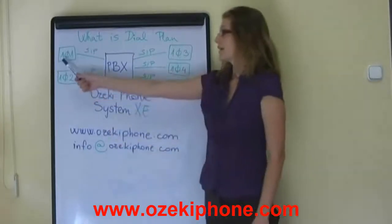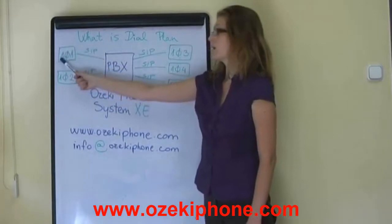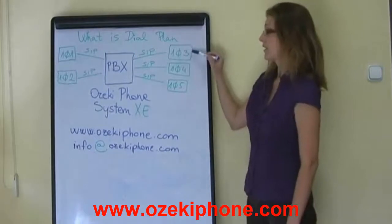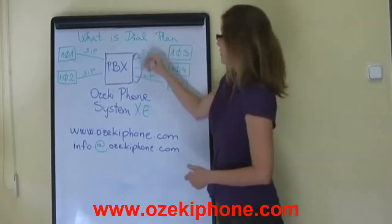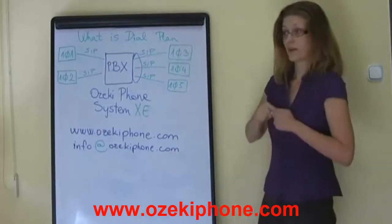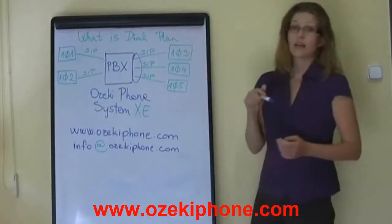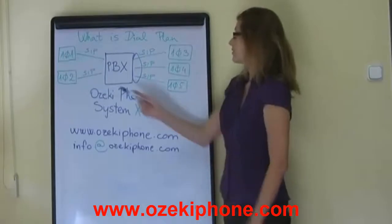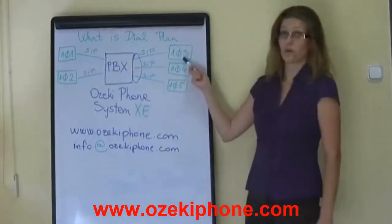Assuming that you are extension 101 and you call 103, the dial plan can define which of these extensions are ringed when you dial 103. In a single rule it can be defined that you dial 103 and extension 103 will ring.